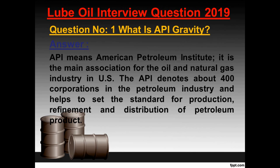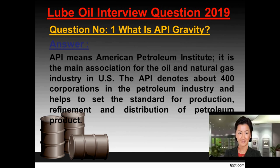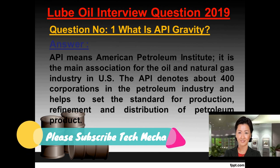Question number one: What is API gravity? Answer. API means American Petroleum Institute. It is the main association for the oil and natural gas industry in the US. The API represents about 400 corporations in the petroleum industry and helps to set the standard for production, refinement and distribution of petroleum products.